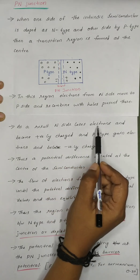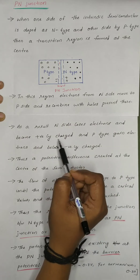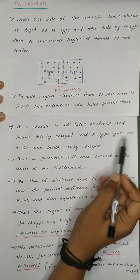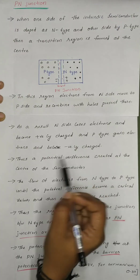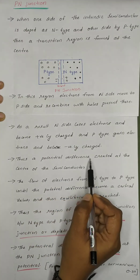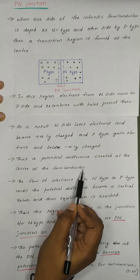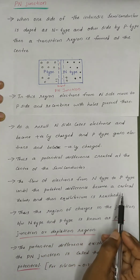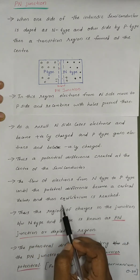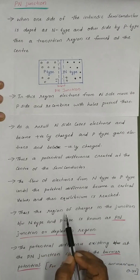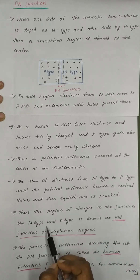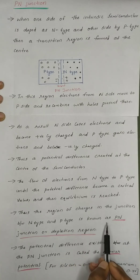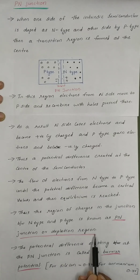As a result, the N-side loses electrons and becomes positively charged, and the P-type gains electrons and becomes negatively charged. Thus, a potential difference is created at the center of the semiconductor. The flow of electrons from N-type to P-type continues until the potential difference reaches a critical value and equilibrium is reached. The region of charges at the junction between N-type and P-type is known as the P-N junction or depletion region. The potential difference existing at the P-N junction is called the barrier potential.